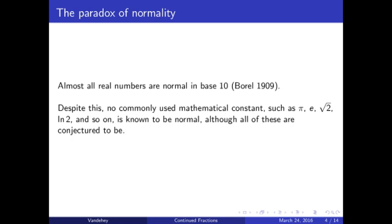Despite this, no commonly used mathematical constant, whether it be pi, e, the square root of 2, or the natural logarithm of 2, is known to be normal, although all of the things I've just listed are conjectured to be.